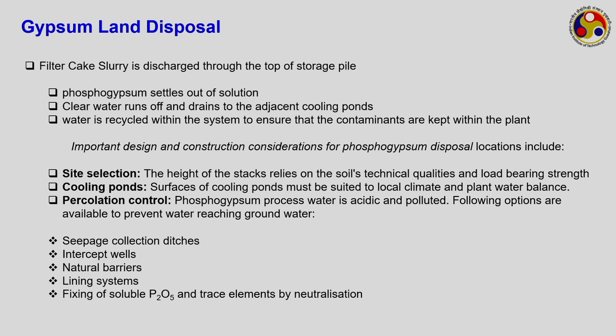For land disposal of filter cake slurry, it is discharged to the top of the storage pile, where phosphogypsum settles out of solution. The clear water runs off and drains to an adjacent cooling pond. Water is recycled within the system to ensure that contaminants are kept within the plant — modern plants ensure that the water is recycled and not released openly.